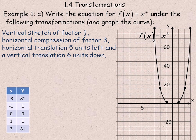What's actually graphed here is the regular x to the fourth quartic function. I have a small table of values: negative 3 to the fourth is 81, negative 1 to the power of 4 is 1, 0 to the fourth is 0, 1 to the fourth is 1, and 3 to the fourth is 81. I've plotted all those points, plus a couple of extra points — the 216 and negative 216 — which are graphed on the graph as well.